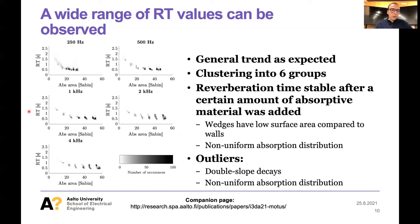In the low frequencies, there are some outliers visible when zooming into the figure in the paper. We investigated these further and found they are due to double slope decays present in the dataset. When fitting only a single slope model to a double slope decay, you get false reverberation time estimates. These outliers are also caused by non-uniform absorption distributions.